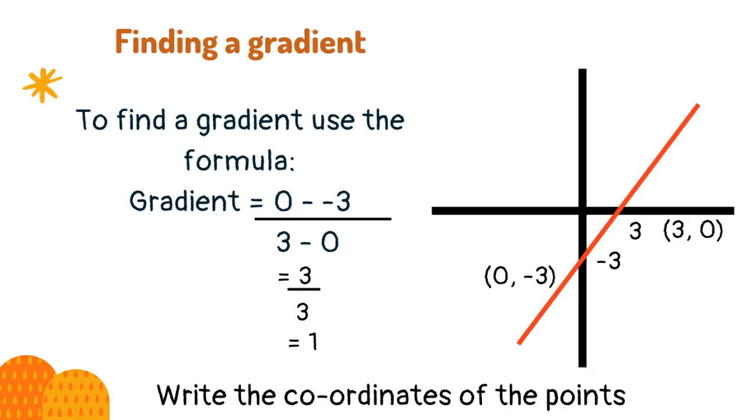Taking two points on the line, (0, -3), the y intercept, and (3, 0), the x intercept, we can take these away. This gives for the change in y, 0 subtract negative 3.